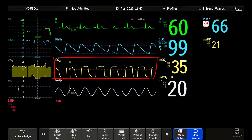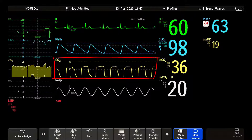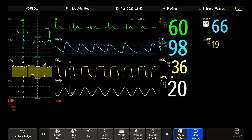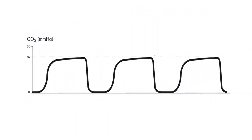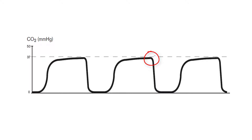Let us now take a closer look at capnograms, or CO2 waveforms. They are the visualization of the exhaled and inhaled concentration of CO2 during the respiratory cycle. In a normal capnogram, you distinguish a baseline, an expiratory upstroke, an expiratory plateau, the end tidal value, and the inspiration phase.